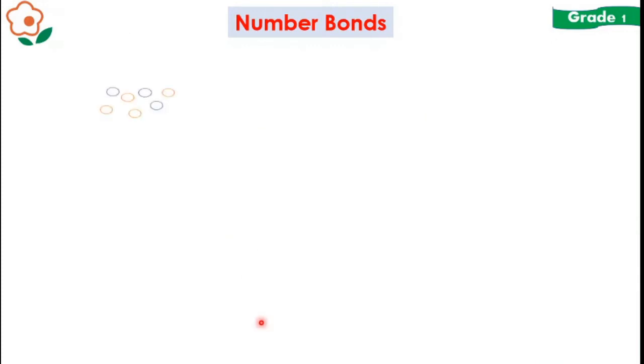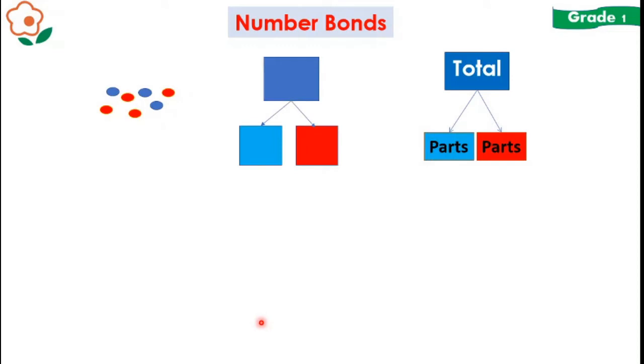Let's try another example. If we take a look at this, I see a bunch of dots. We have blue and red dots. We are going to put these into a number bond. So let's first address what we have. I see three things here: the dots, the red dots, and the blue dots.